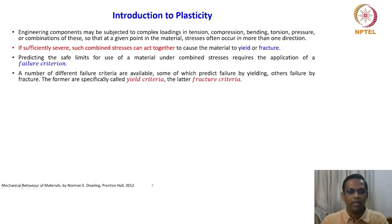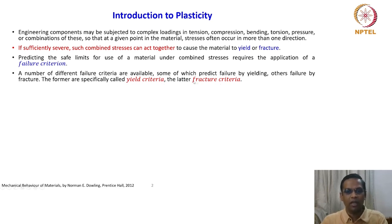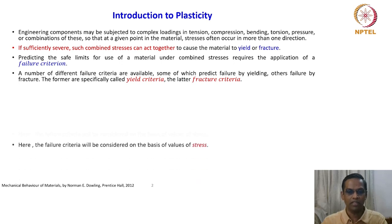A number of different failure criteria are available, some of which predict failure by yielding and others predict failure by fracture. We are talking about two different things: either the material can yield or fracture. Yield is better than fracture because fracture is complete total failure, while yield is a partial failure — kind of a warning signal. The former are specifically called yield criteria, the latter fracture criteria. So we are looking at two different criteria: yield criterion and fracture criterion.